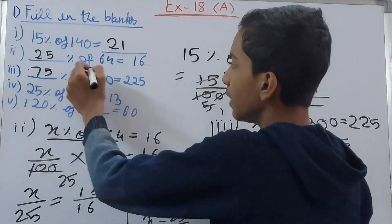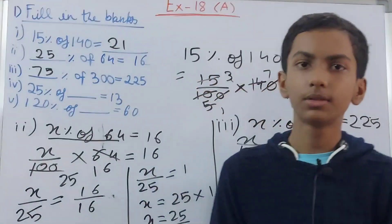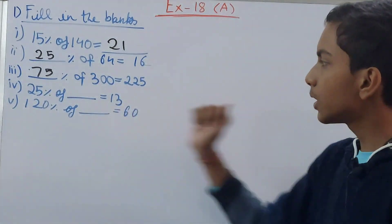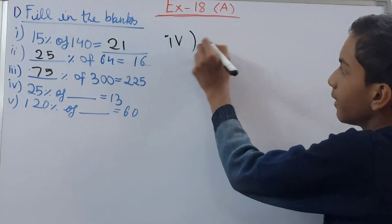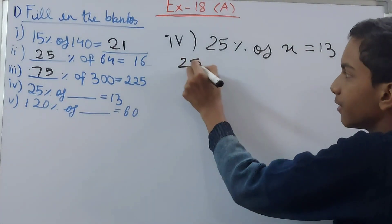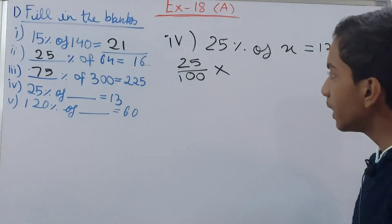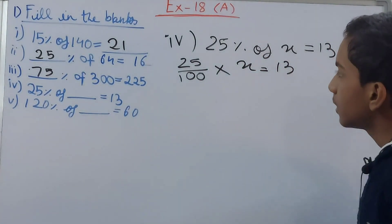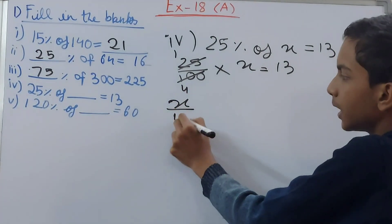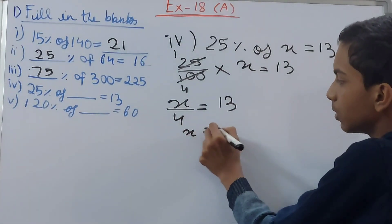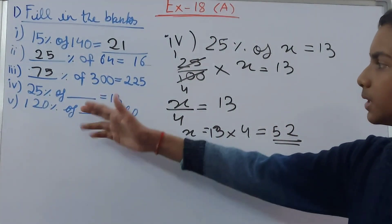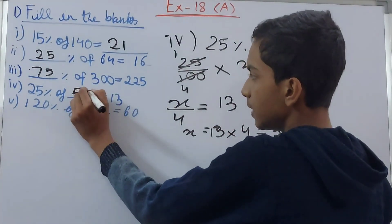Fourth part: 25% of blank = 13. Assume the unknown as x. So 25/100 × x = 13. Simplify: x/4 = 13, so x = 13 × 4 = 52. Therefore 25% of 52 equals 13.